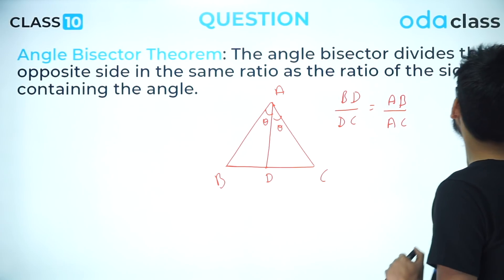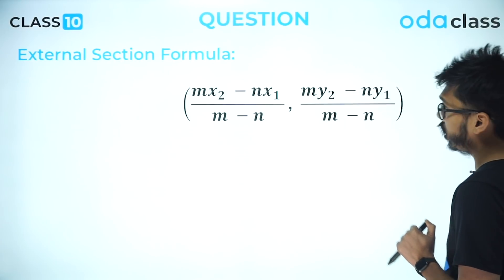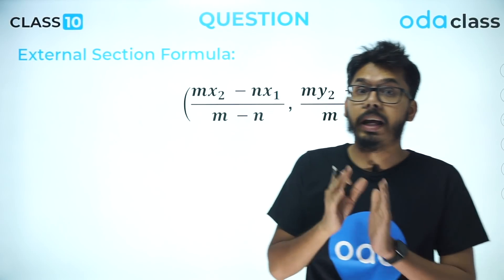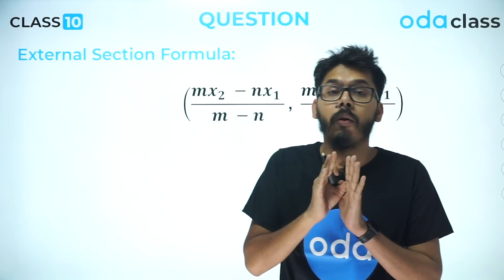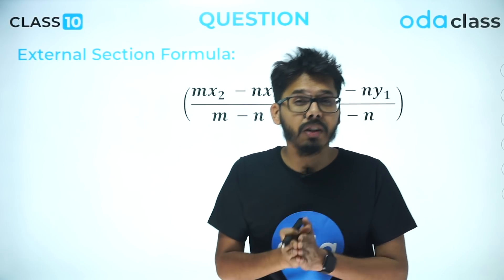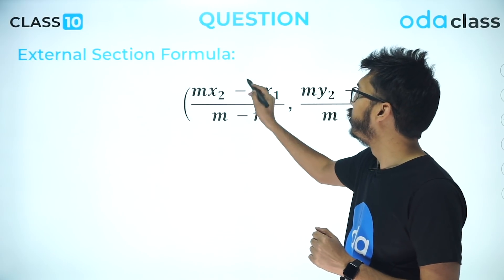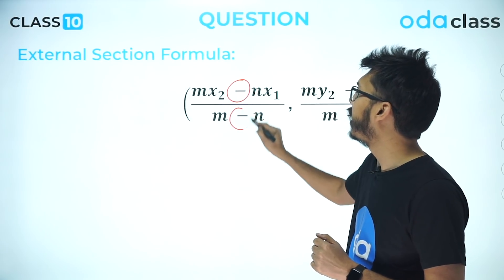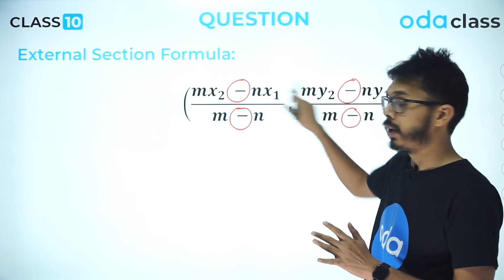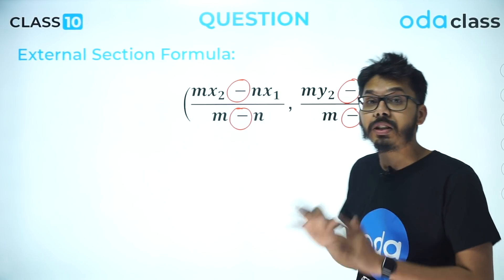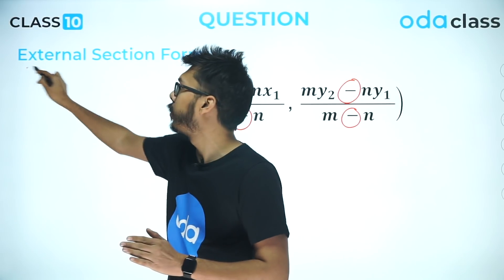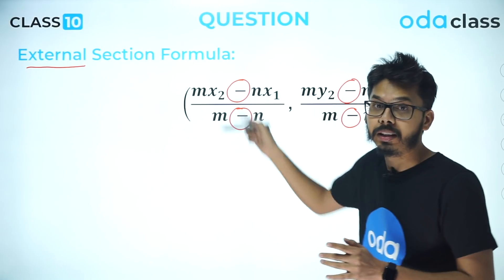The next point I've collected is based on external division formula. You all are very comfortable with internal division, but when it's external division, notice that there's a minus sign compared to internal division, where you get a plus sign. This is one common mistake students make in the final exam. So when external division is coming, make sure you're writing the minus sign.